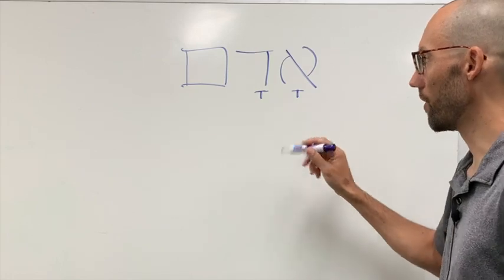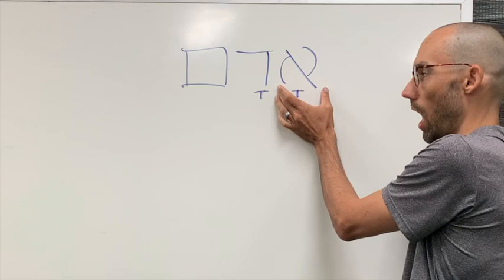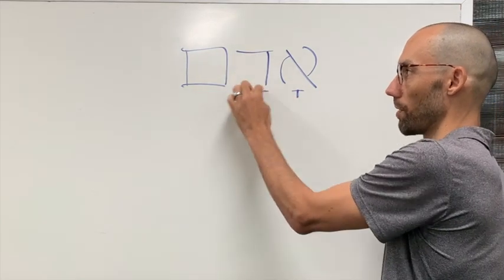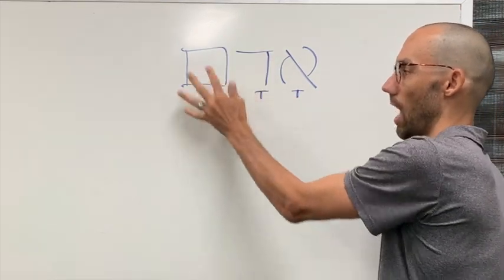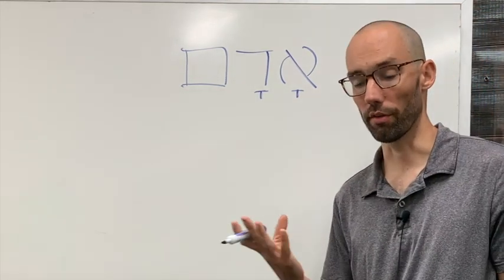This syllable is an open syllable. This is a closed syllable because it has an ending. So that's the Kamatz. That's one of the vowels.